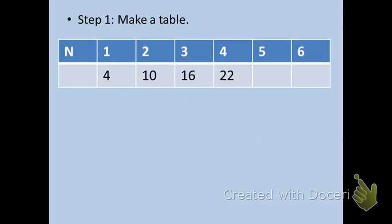The first step in finding the nth term, or coming up with a formula for a sequence, is to make a table. I used the same numbers that I had in the previous slide, except now I have them in a nice, organized table, and each number is under what term that number is in the sequence. For example, 4 was the first term, so it's under 1, 10 was the second, so it's under 2, 16 was the third, and so on.